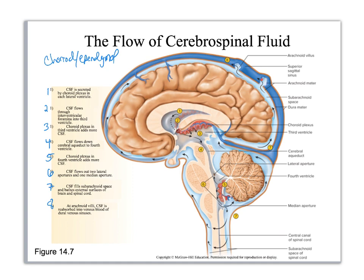You've got the arachnoid villi — also called granulations — and they poke out into the arachnoid space so that the cerebrospinal fluid here can diffuse into the bloodstream. This is venous blood. There's a membrane here and the cerebrospinal fluid diffuses across the membrane into the venous blood in the dural sinus.